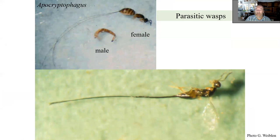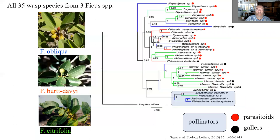This is an example of a fig wasp community — three fig species from Africa and the phylogeny of their pollinators, parasitoids, and gallers. Pollinators are nicely separated. On the other hand, although there is some phylogenetic signal, switching between being gallers and parasitoids is surprisingly common in the phylogeny.